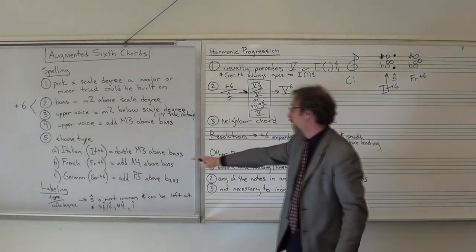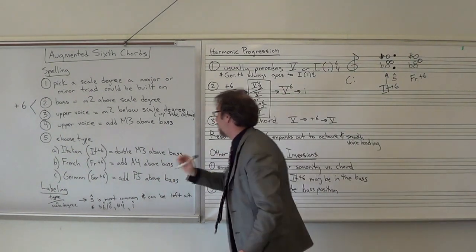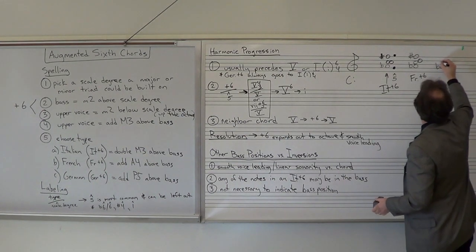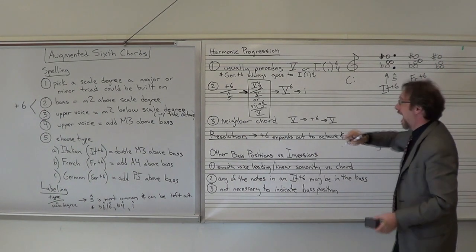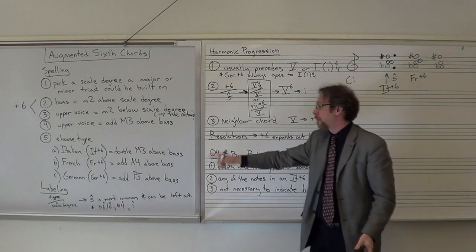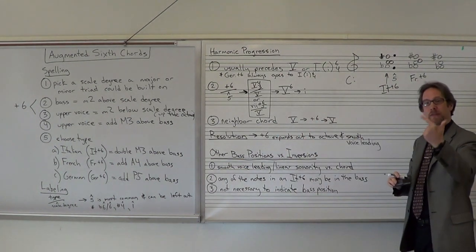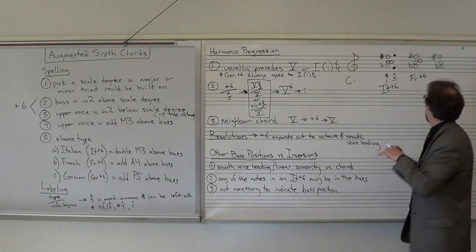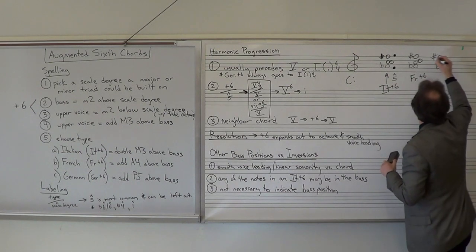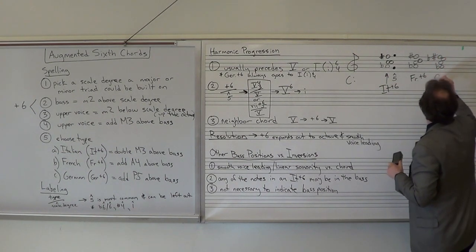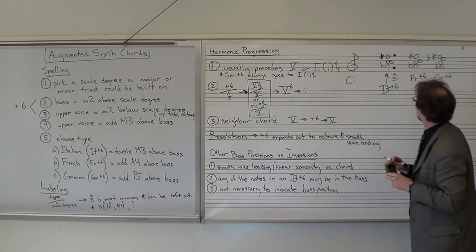Finally, if I want a German augmented sixth, I take my core — A-flat, C, F-sharp — and add a perfect fifth above the bass. A-flat, B-flat, C, D-flat, E-flat. Put the E-flat right there, and that would be labeled German augmented sixth.